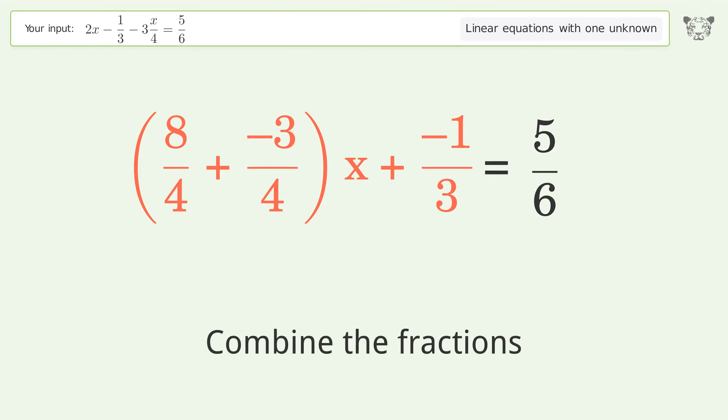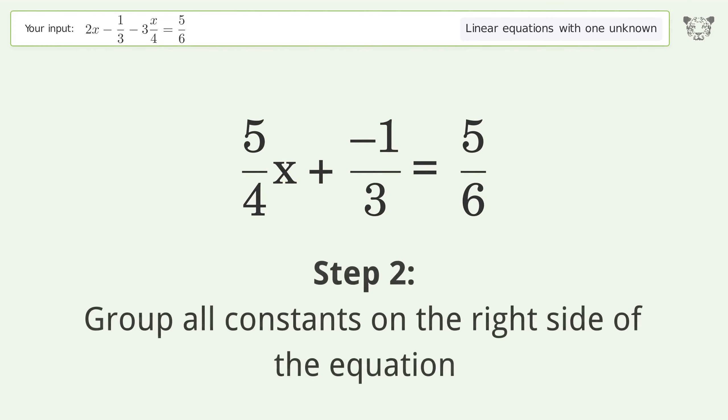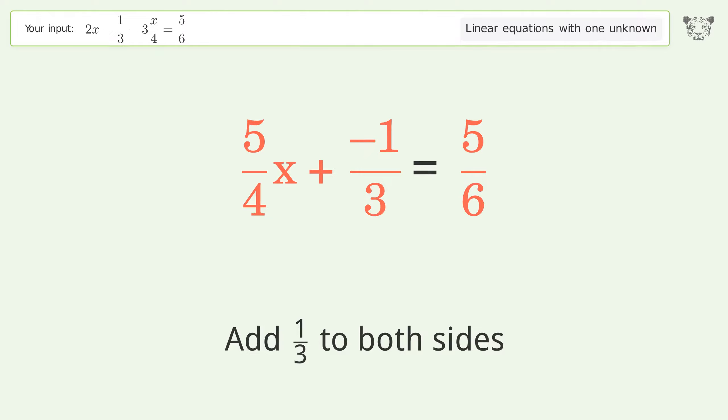Combine the fractions. Combine the numerators. Group all constants on the right side of the equation. Add 1 over 3 to both sides.